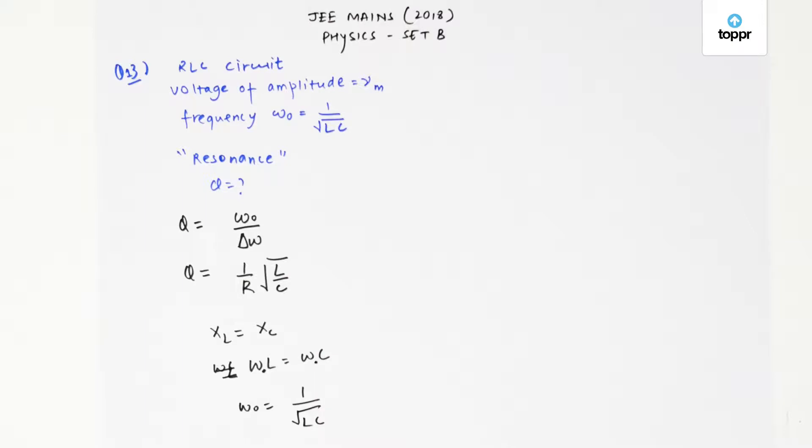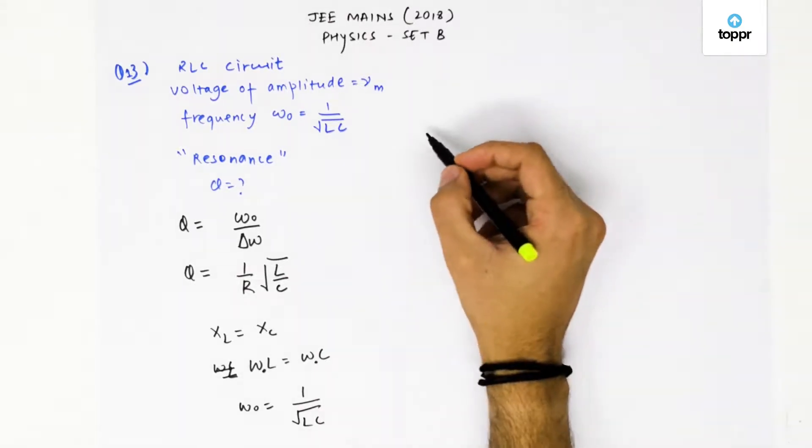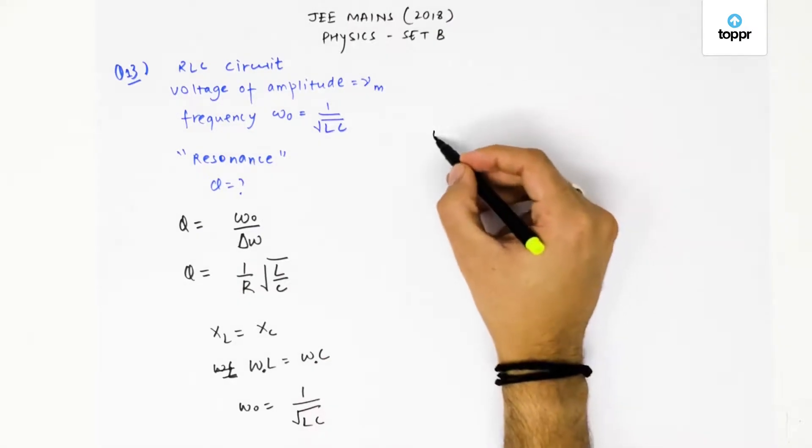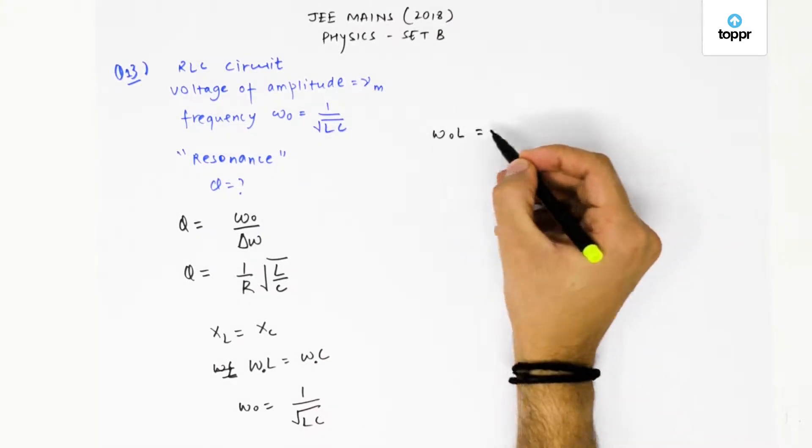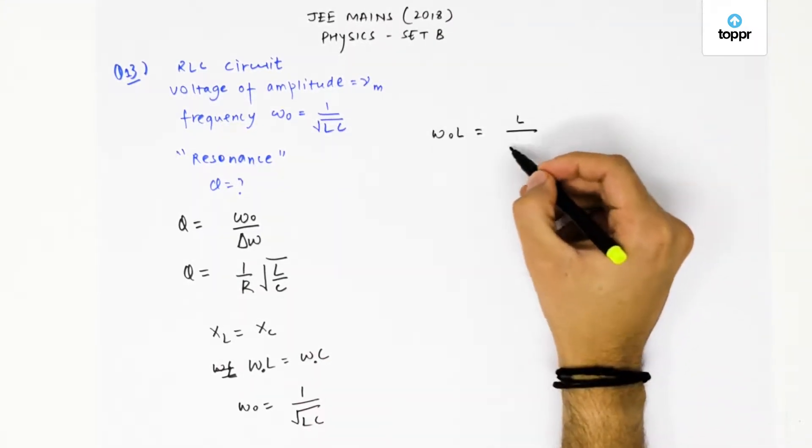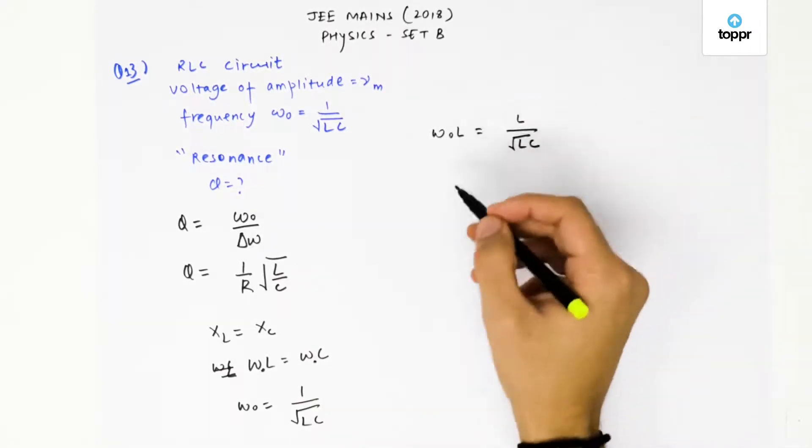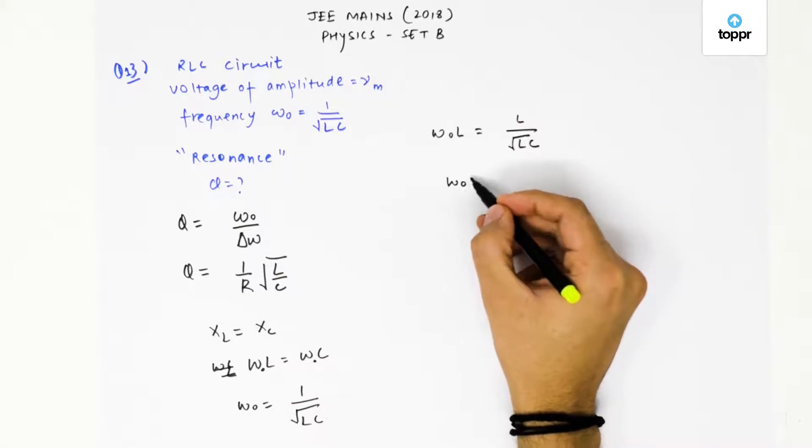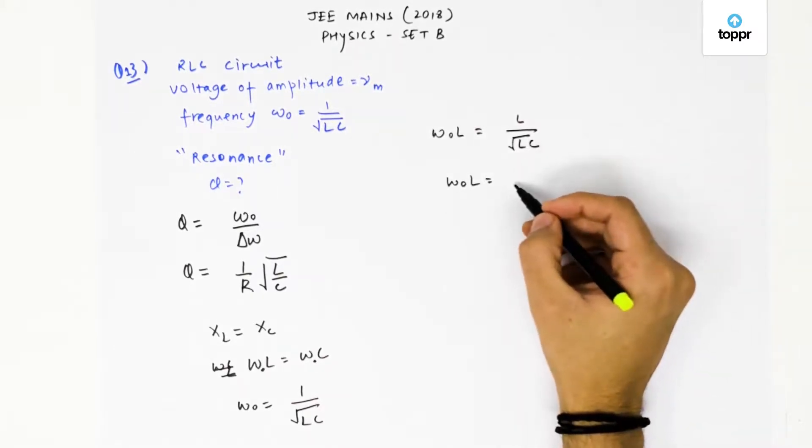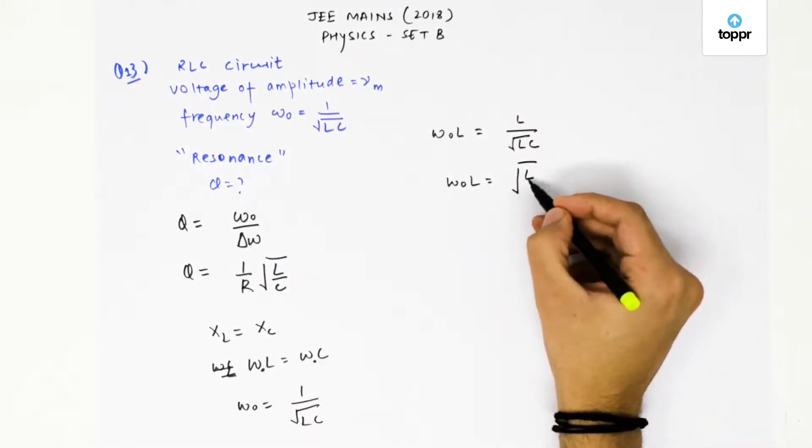Now we have to do some calculations and tweak this ω₀ a little. What would be ω₀L? It would be L/√(LC). From here, it is just multiplying both sides by L. So this would be equal to √(L/C).